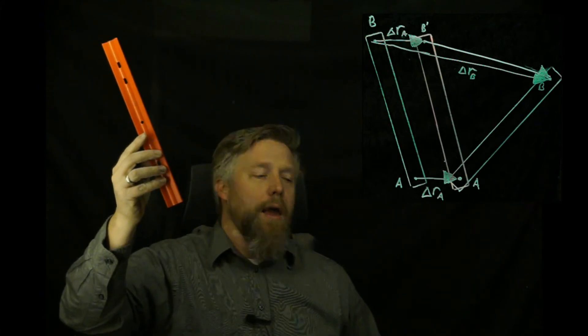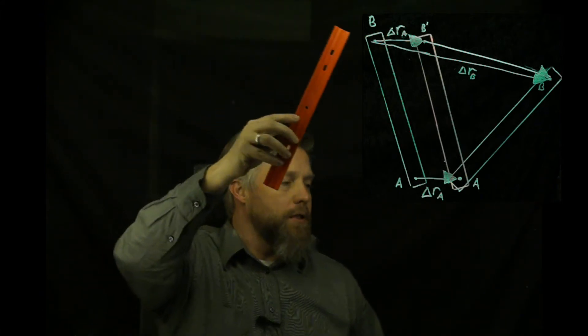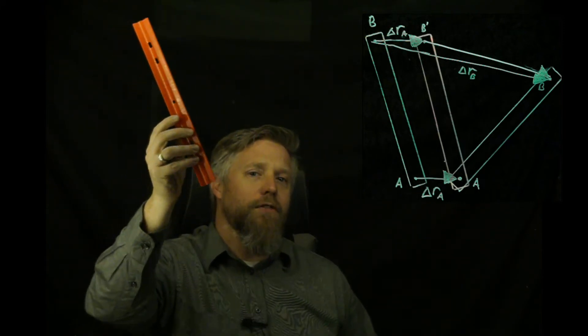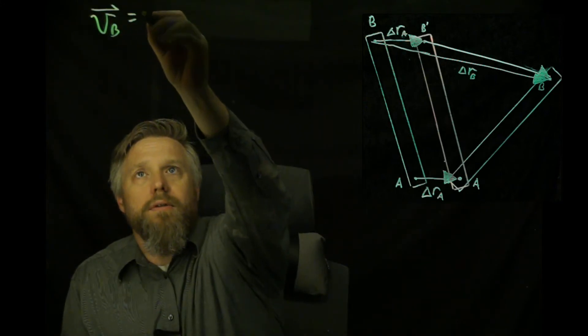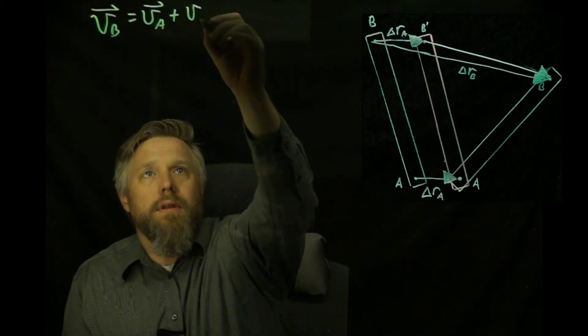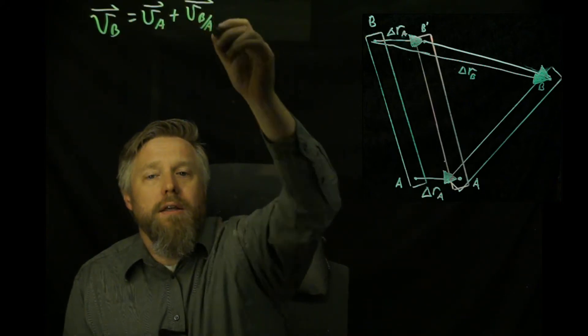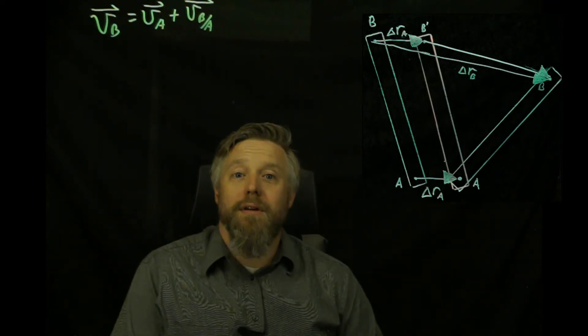In that video, we took this ruler. We had it going through general planar motion, where it's rotating and translating, and we were able to mathematically separate out its translation from its rotation. We made this drawing — the ruler went from one position to another, and we drew an imaginary ruler in the middle where we imagined it first translated and then rotated. We came up with the equation that the velocity of one point, b, is equal to the velocity of another point, plus the velocity of b with respect to a. We recognized that that was the same equation we got in relative motion with our particle assumption.